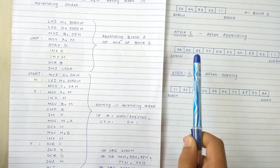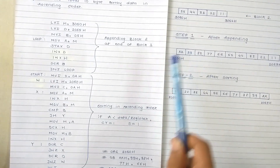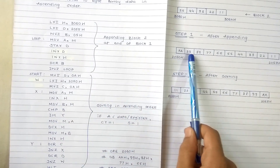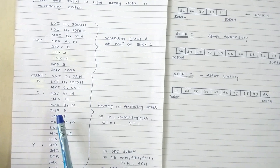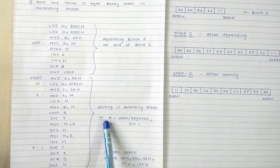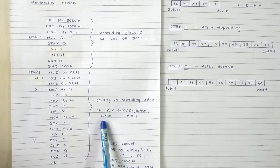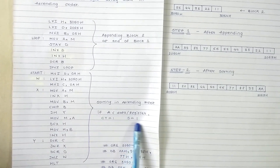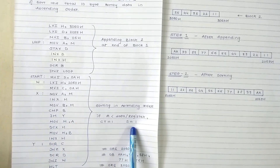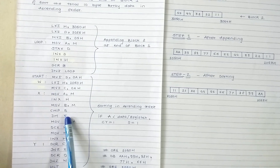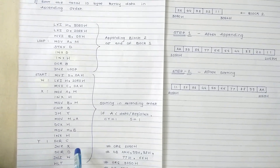We move data from the memory location to the accumulator, point HL to the next location, and move that next data into register B. We compare the data in register B with the accumulator. If the accumulator data is less than the data in register B, the carry flag and sign flag are set, so we jump if minus — that is, if the sign flag is set, it jumps to label Y, decrements the C count, and loops back.